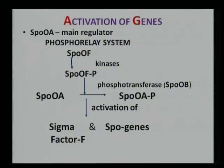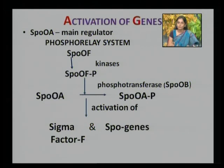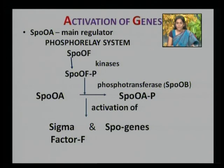The major signal transduction pathway for the initiation of sporulation is a phosphorelay system, which phosphorylates the Spo0A factor, thus activating its function. Spo0A is the main transcriptional regulator which controls the transcription of many hundreds of genes and proteins responsible for the process of sporulation. The transfer of phosphorus to Spo0A is not direct but is regulated by a complex network of interactions.